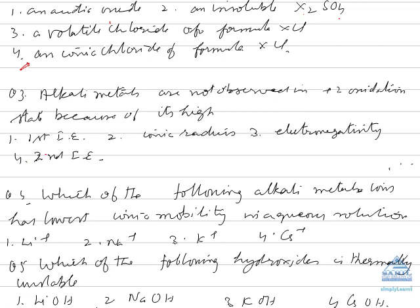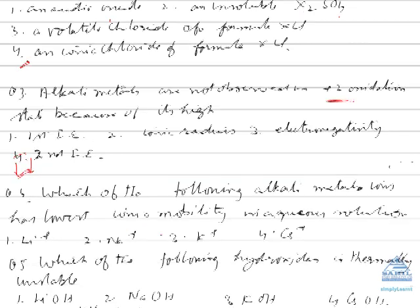Evaluating the choices: high first ionization energy is wrong — alkali metals actually have the lowest ionization energy in each period. Small ionic radius and low electronegativity are also incorrect reasons. The correct answer is that the second ionization energy is very high, which is why alkali metals do not show a +2 oxidation state.